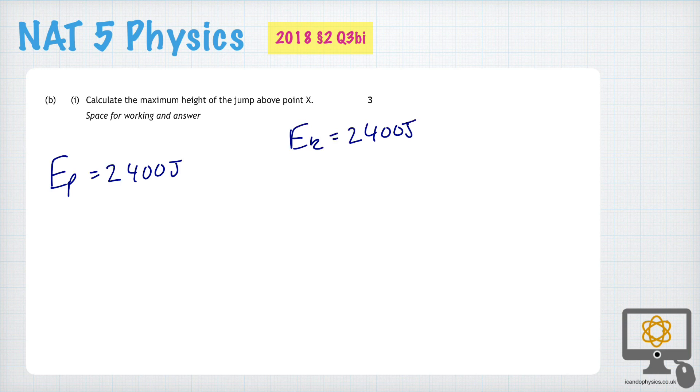And so now that we know that, we can determine the height that the bicycle jumped off the ramp using the formula Ep is equal to mgh.